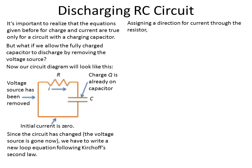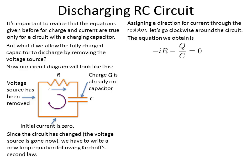We're going to set our current like we did before, with current going through the resistor in that direction, and we're going to go around in a clockwise manner. We start here and we see that we go across this resistor and get minus I times R — the voltage drop across the resistor. Then we come across this capacitor and we have a voltage drop of minus Q over C, and this whole expression has to add to zero.